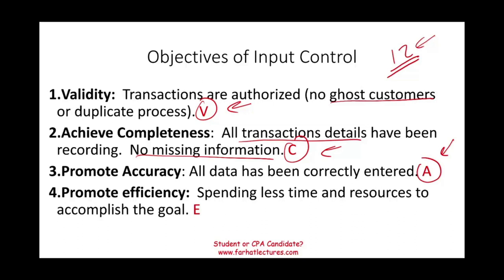Computers work faster, don't get tired, and work 24/7 without breaks, so you spend less time and resources to accomplish your goal if you automate the system. For example, think about a scanner in a retail store. When the scanner cannot read the barcode because the box is damaged, the teller has to manually input a 15 to 20-digit code and sometimes makes mistakes. With a scanner, you scan the item and the sale is recorded — scanning is part of input control and it promotes efficiency.